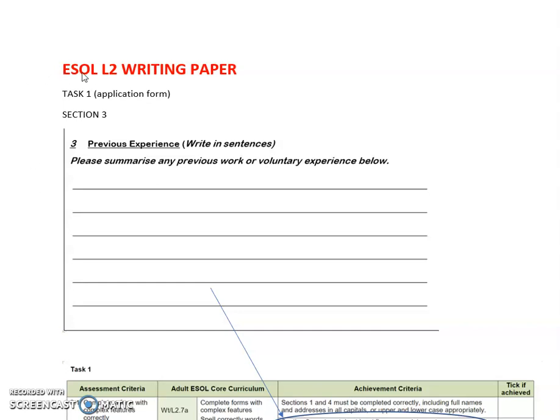In this video, we'll be looking at an ESOL Level 2 writing paper. Task 1 is filling in an application form, and we're specifically looking at Section 3 of Task 1, which is Previous Experience. I hope this video is useful to my Level 2 students, or any other students, but I also hope that you might be able to take some knowledge from this video and apply it to circumstances where you would really be applying for a job. So hopefully this is going to be useful for two different occasions.